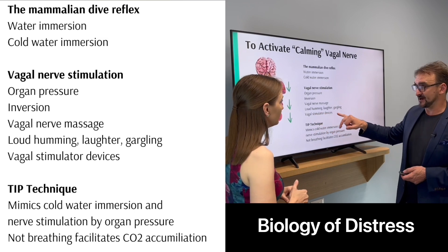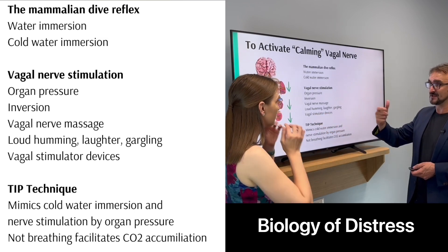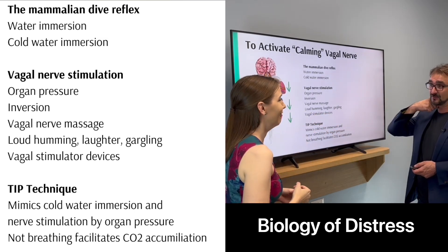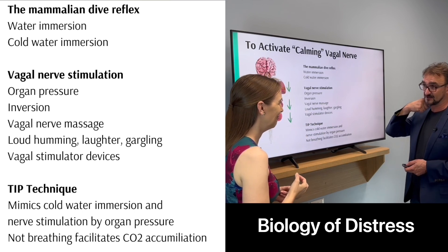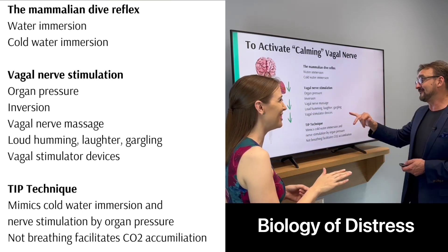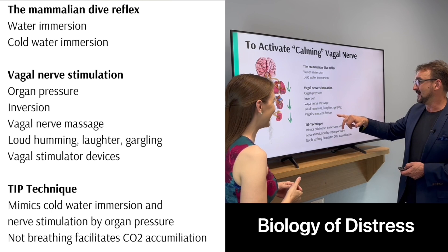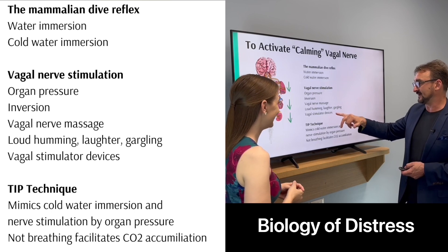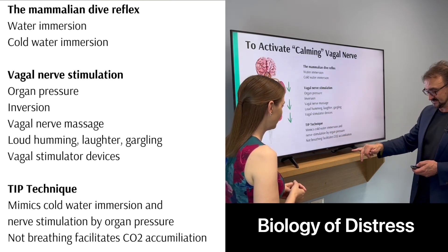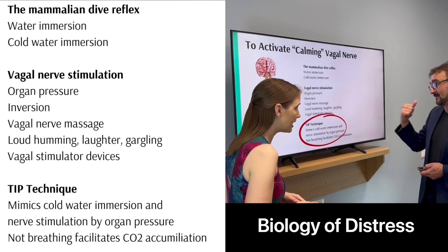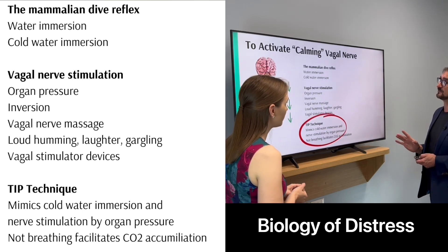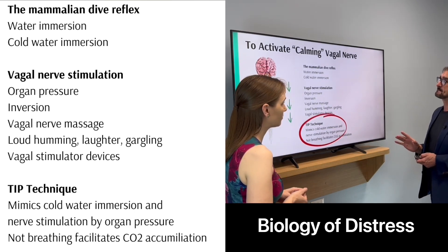You can get vagal nerve stimulator devices — there's one that looks a bit like a taser that you put on the vagal nerve in the neck and zap it. Let's not recommend that without supervision. There are also implantable ones. Then there's the TIP technique, which is what we recommend and will be covering in our next lesson. So that's the vagal nerve.